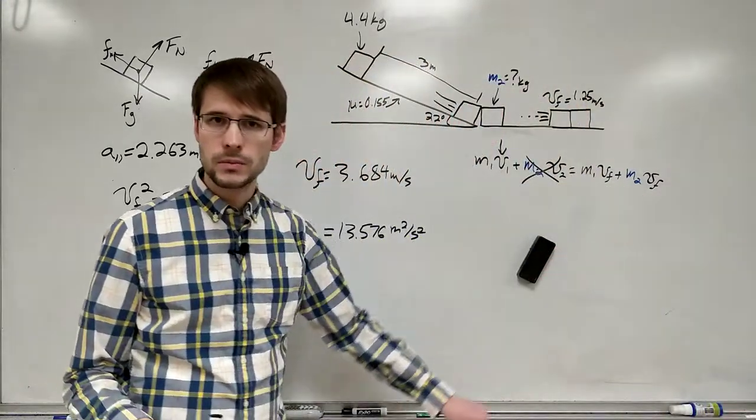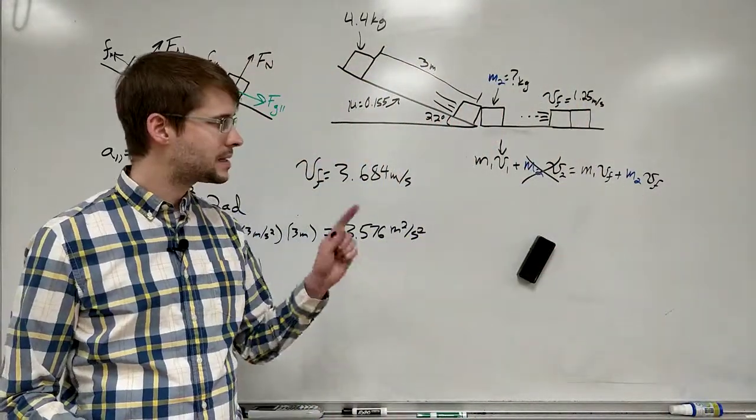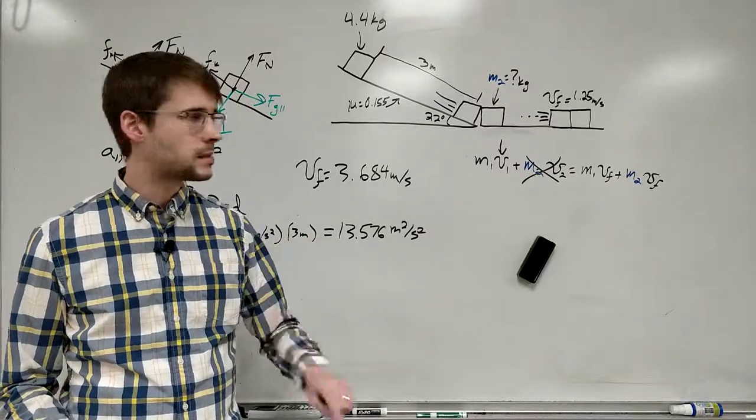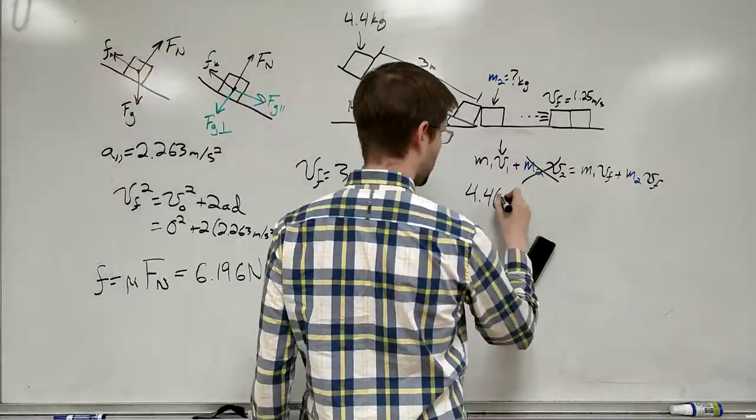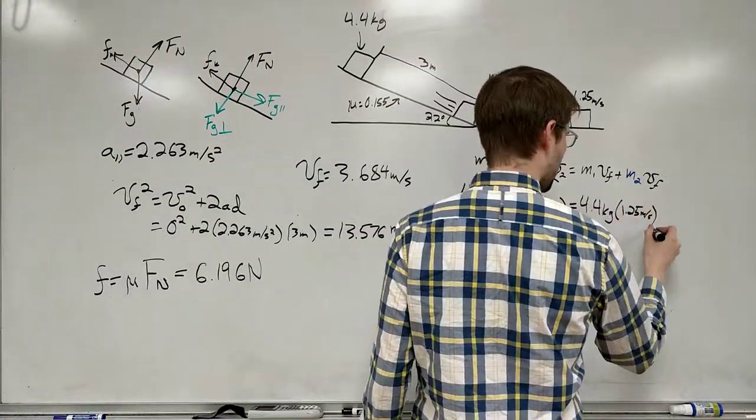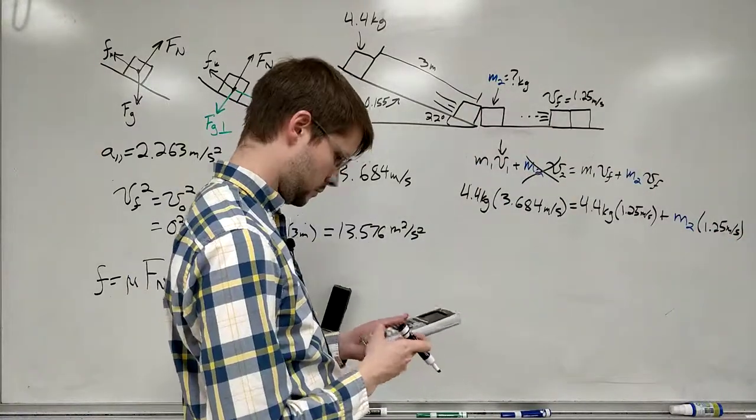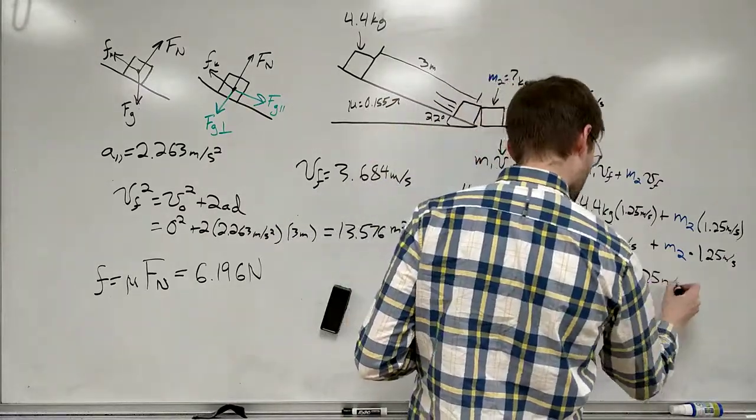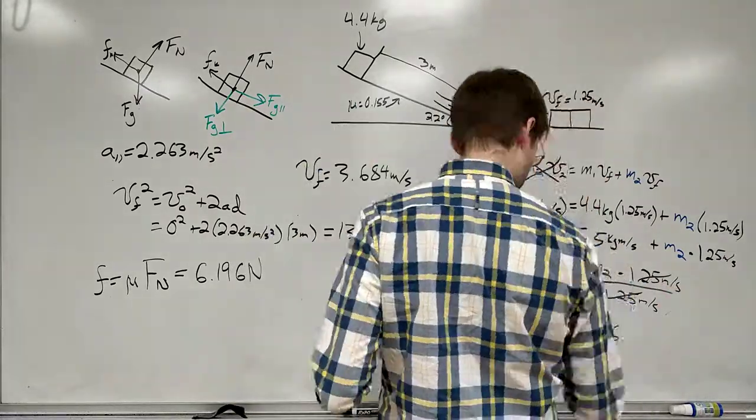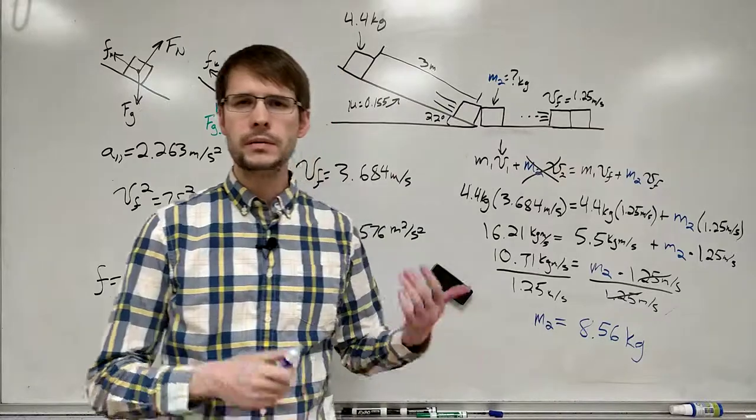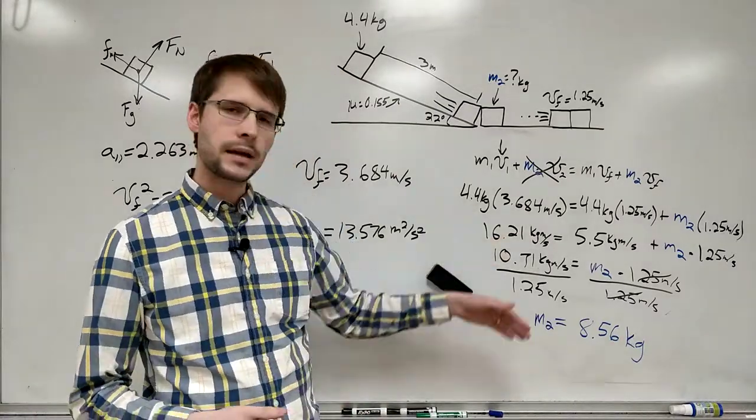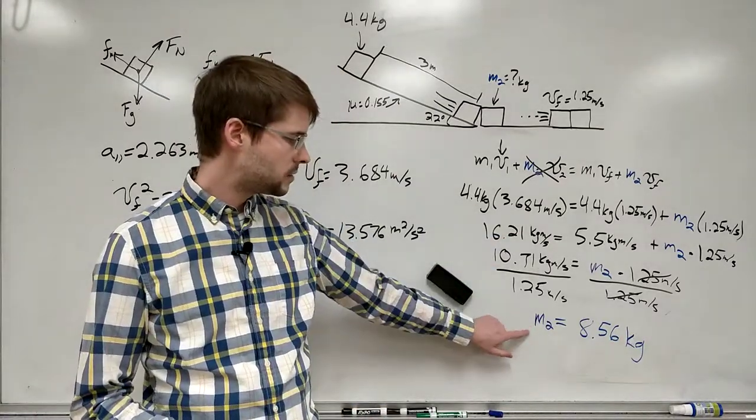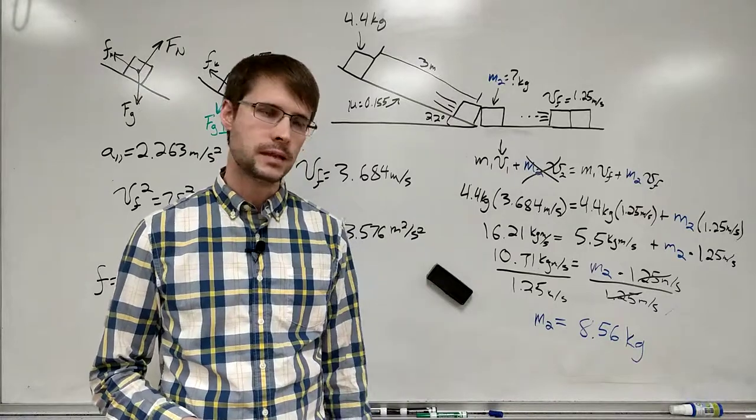So we're going back to our equation we wrote down at the beginning to do the last step of finding the mass by plugging into this equation. So going through, doing what we had done before, plugging everything in here, we get that the mass 2 is equal to 8.56 kilograms.